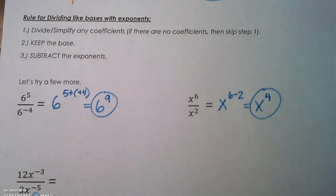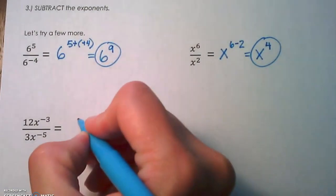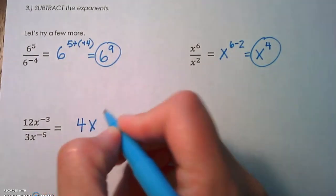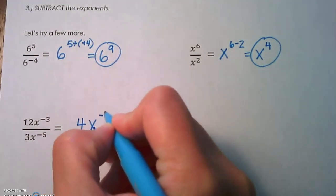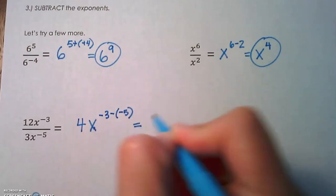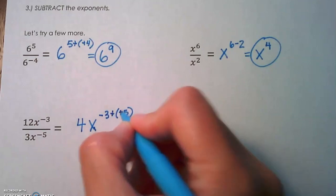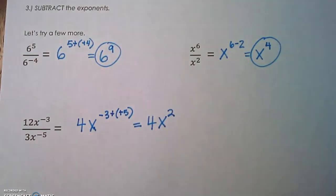Next example—we've got some coefficients in there. 12 divided by 3 is 4. We are going to subtract the exponents—that's negative 3 minus negative 5. That's going to be 4x to the negative 3 plus 5, which is going to give us 4x squared. You might have to brush up on those integer rules just a little bit for these examples.